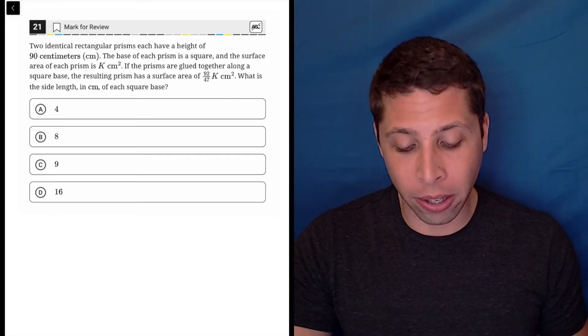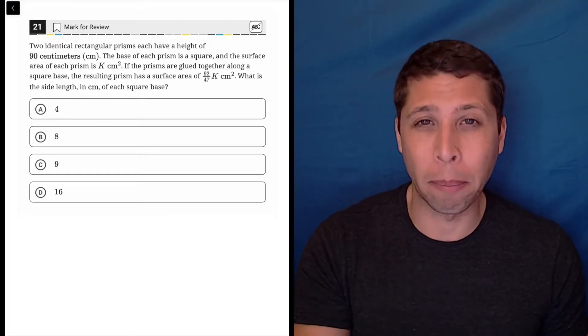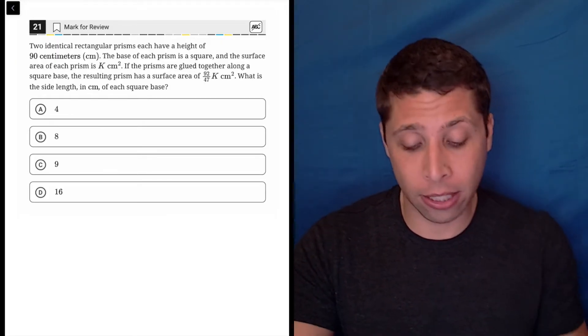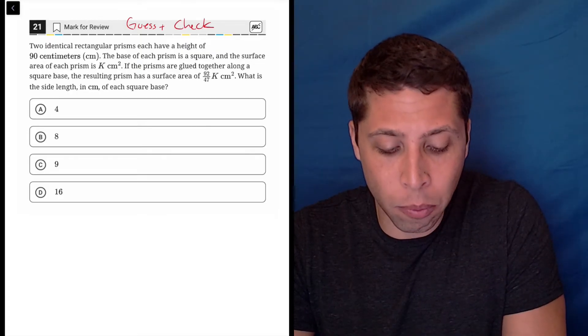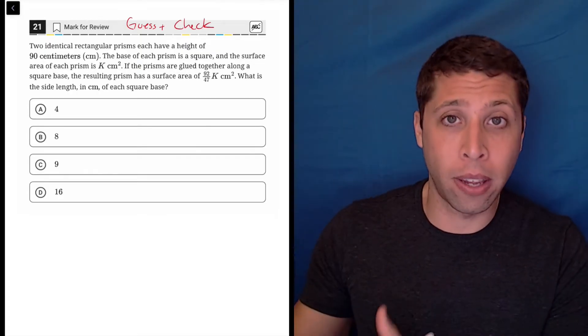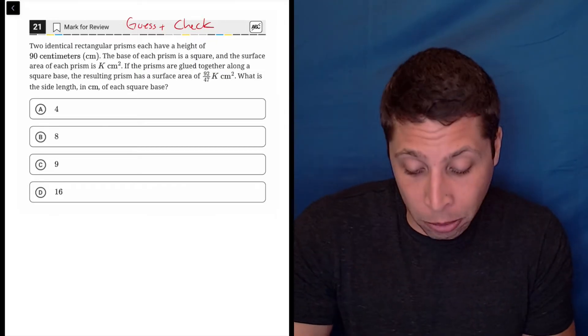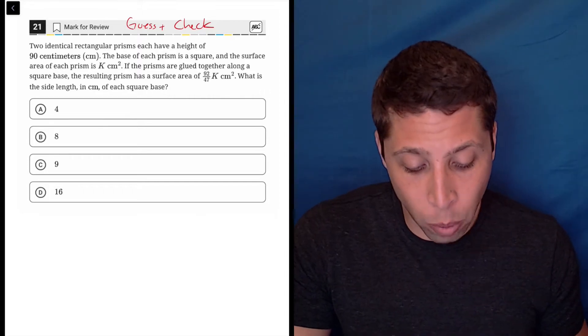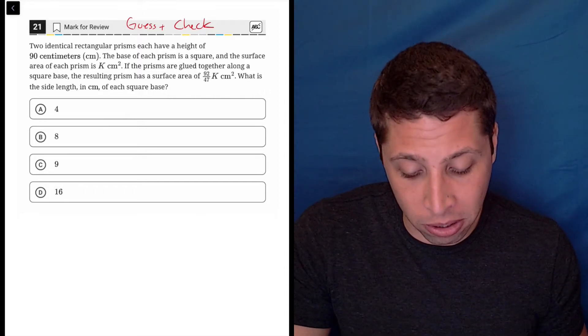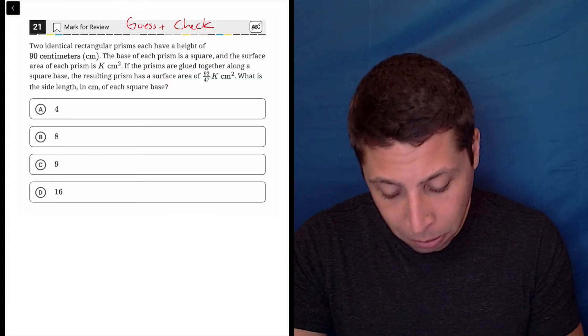What I would do here is because there's so many pieces moving around and the thing that we're told to solve for is a pretty basic piece of this picture, I would be guessing and checking. I cannot really conceive of what's going on without having a specific value to work with. Let me just show you what I mean. Let me draw what they say. Two identical rectangular prisms, each of a height of 90 centimeters. The base of each prism is a square and the surface area of each prism is k centimeters squared. Clearly, I'm going to need the surface area of the prism. Let me just draw one.